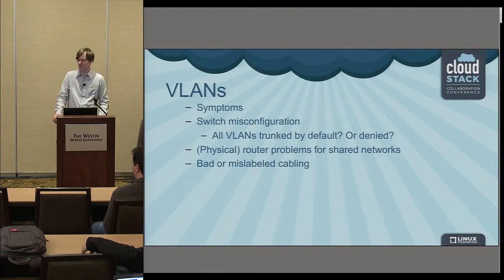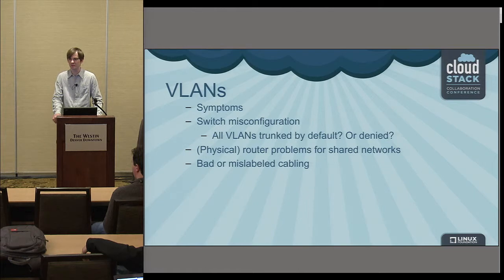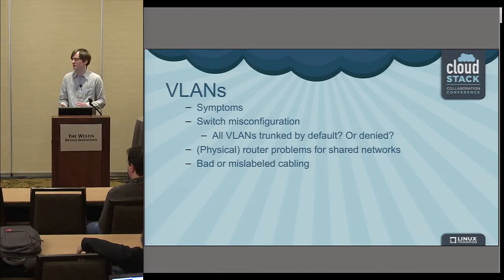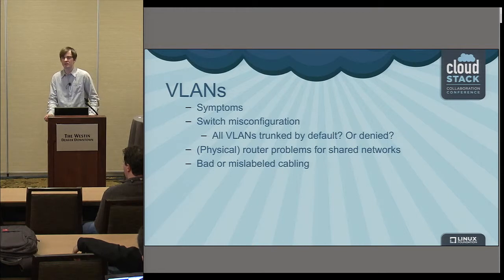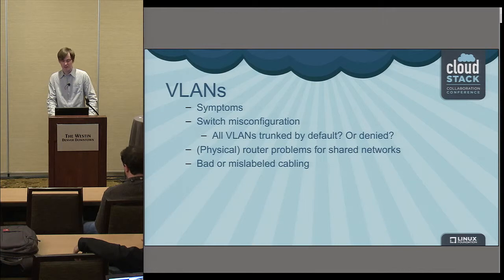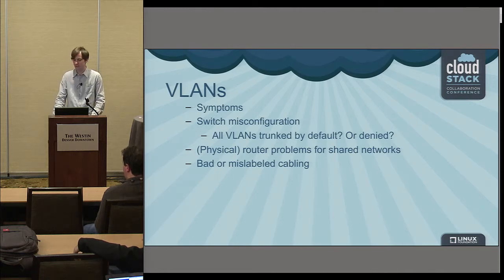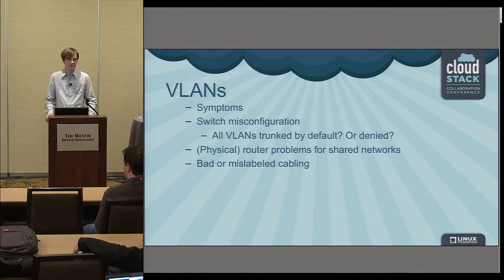The troubleshooting typically involves, if you're using XenServer or KVM, you can use tcpdump at the host level and listen on different levels of the network — on a bridge, the virtual interface, or the physical interface. XenServer with Open vSwitch may be a bit harder, same with VMware. You might need to set up span ports or dummy VMs to isolate where the traffic is being dropped.